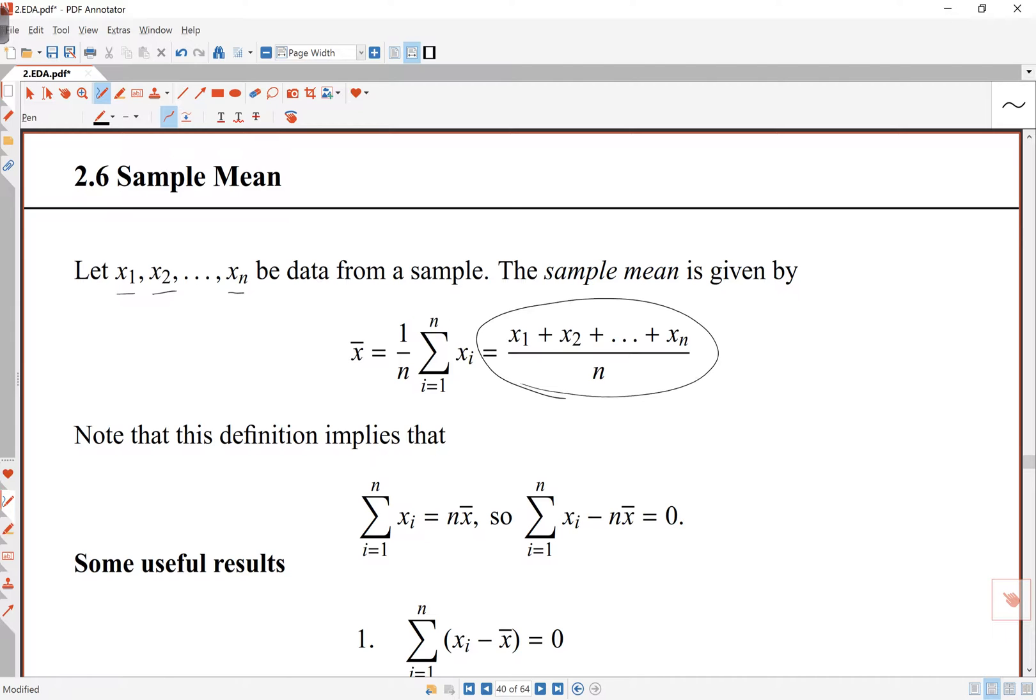If I write this in our summation notation, this sum from 1 to n of xi is this top part here. That's this summation, and there is 1 upon n over there. So if I look at this...